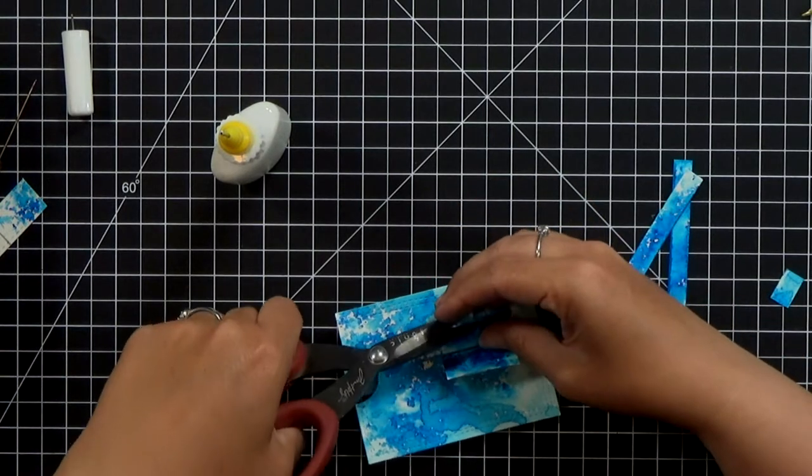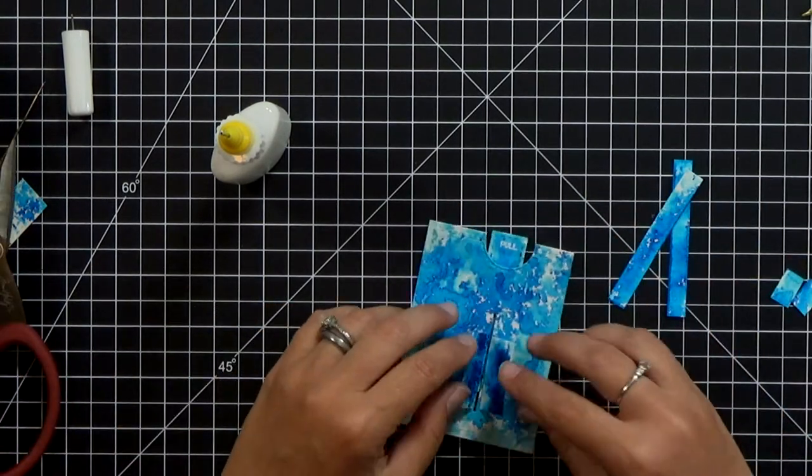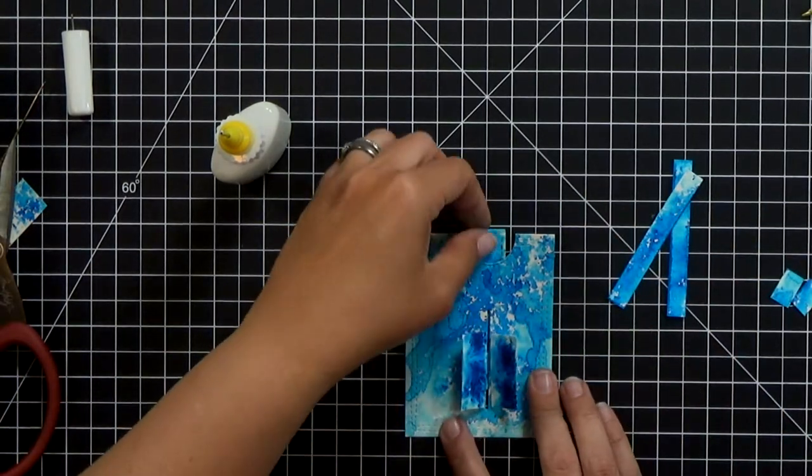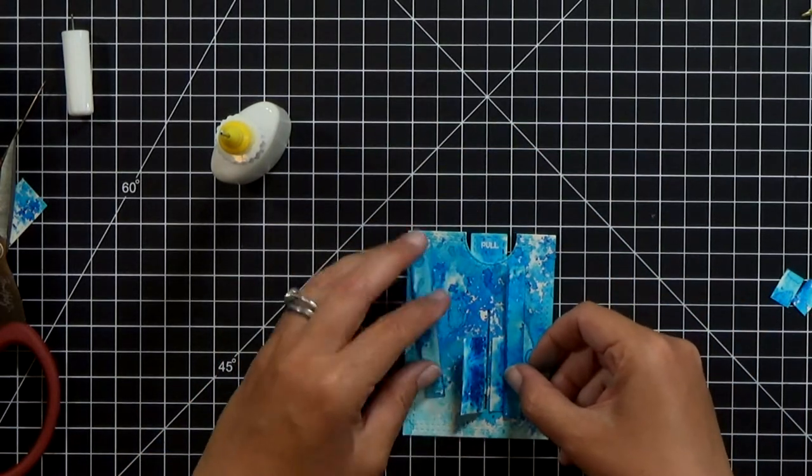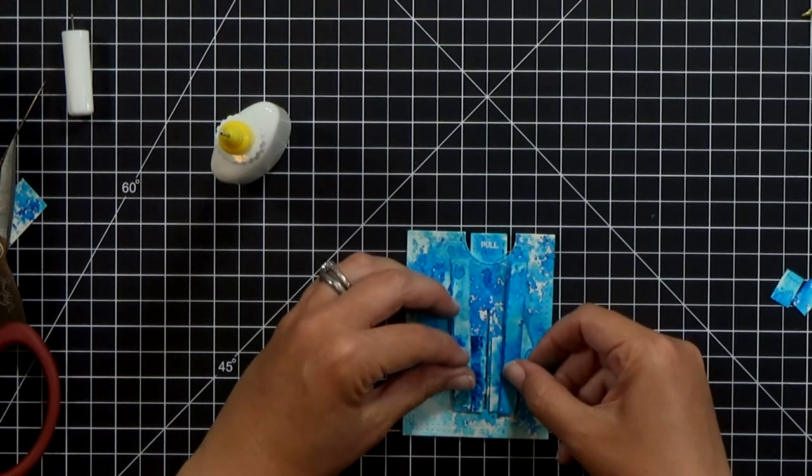Okay so now these are the two little wiper arms. Those are just another set of 3/8 inch strips.